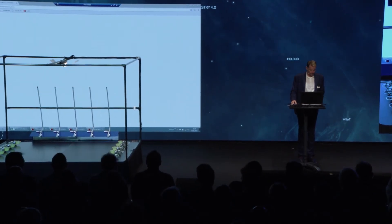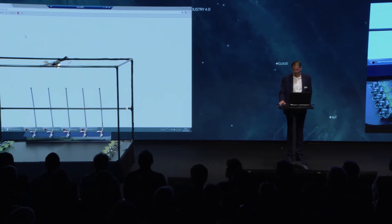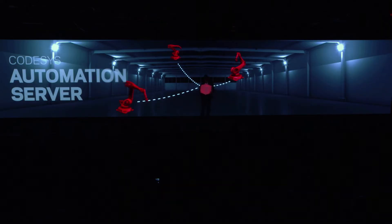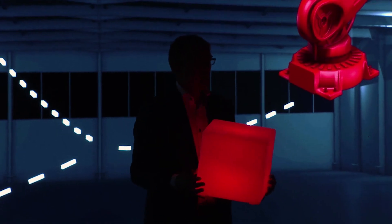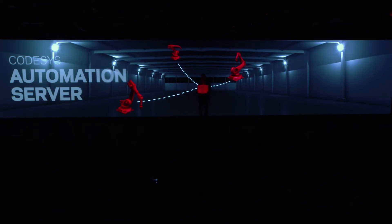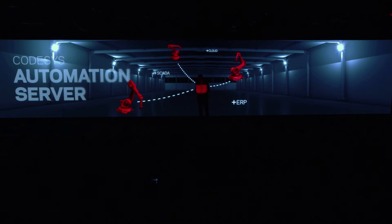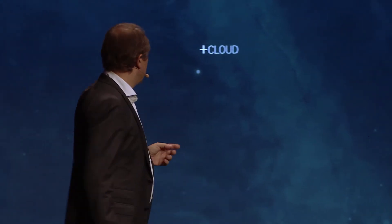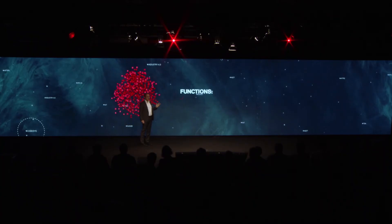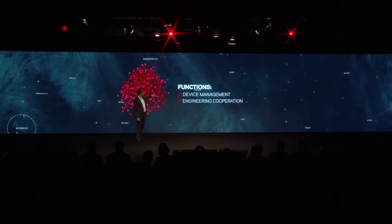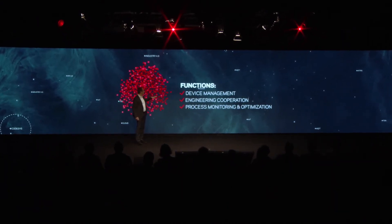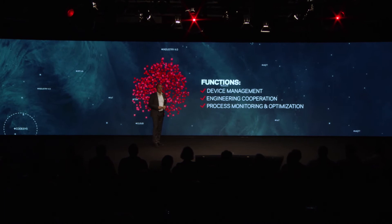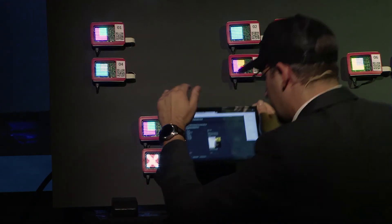As suggested, everything should come with its own visualization. All devices are directly or indirectly connected with the CodeSys automation server. It manages source code, backups, and parameters. It mainly covers three functions: first, device management; second, engineering cooperation; and third, process monitoring and optimization — including recording data for process monitoring and optimization.